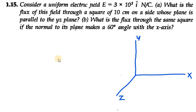Hello everyone, let's start with question number 15. It says consider a uniform electric field E = 3×10³ i cap Newton per coulomb. What is the flux of this field through a square of 10 centimeter on a side whose plane is parallel to the yz plane?